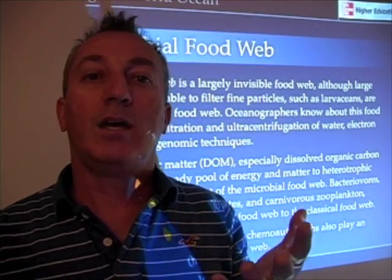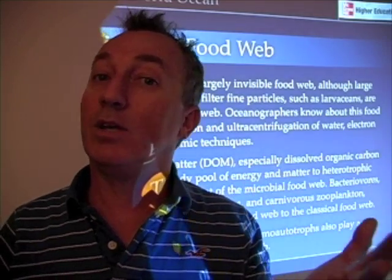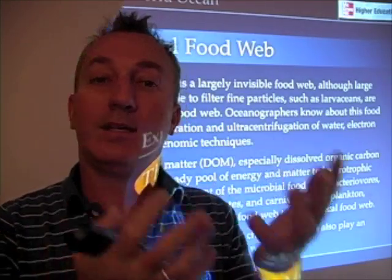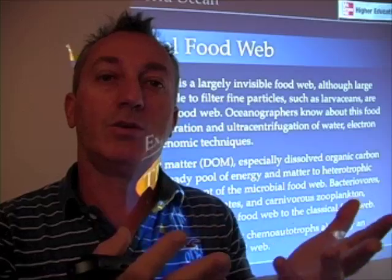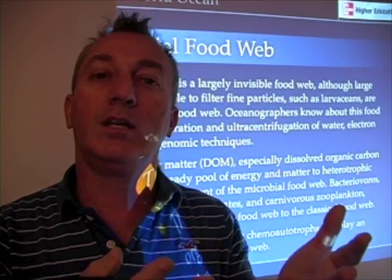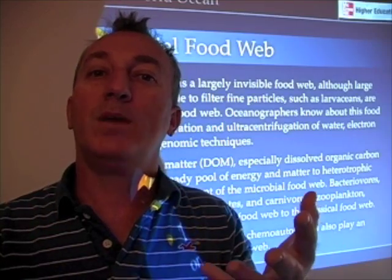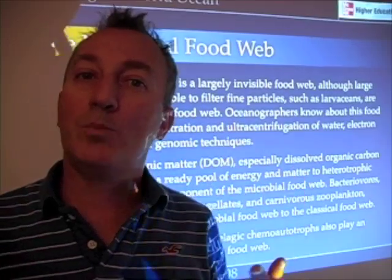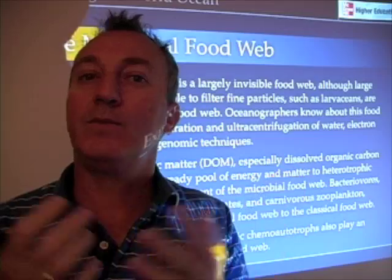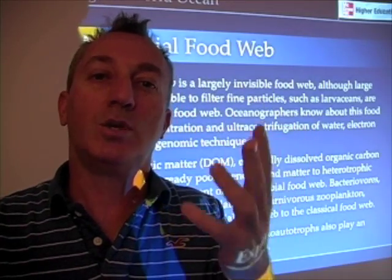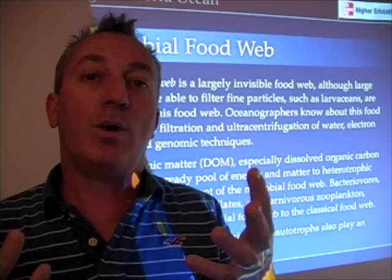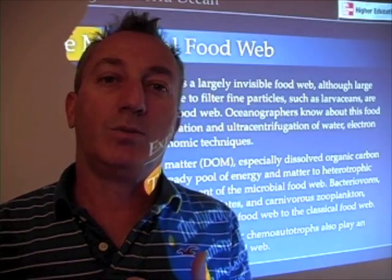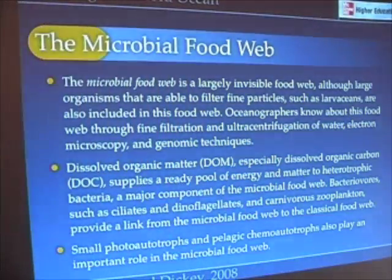In some sense, we have primary producers — the cyanobacteria — and secondary producers, the heterotrophic bacteria growing on dissolved organic matter. They form a sort of microbial food source for small zooplankton. The small zooplankton themselves can then be a food source for larger zooplankton, and in that way the microbial food web can actually feed into the classical food web, as we'll see with an illustration.